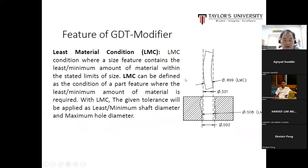LMC is the opposite, where the size of feature contains the minimum amount of material within the stated limits of size. With LMC, the given tolerance will be applied as minimum shaft diameter with maximum hole diameter, so opposite of MMC.